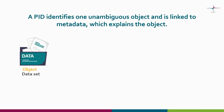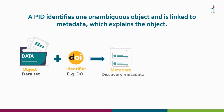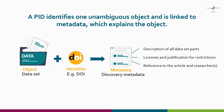Although there are many kinds of different persistent identifiers, the basic concept remains the same. A PID identifies one unambiguous object and is linked to metadata which explains the object. The object can for example be a dataset which has been assigned a DOI, and the linked metadata should describe all parts of the dataset, their licensing and access restrictions. The metadata of the dataset could also refer to other research outputs like articles or code.